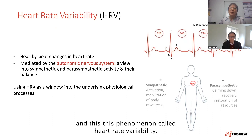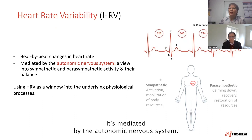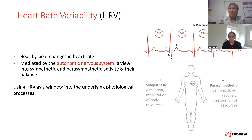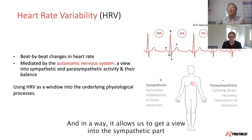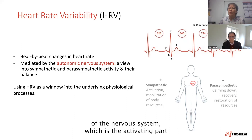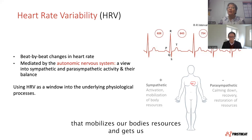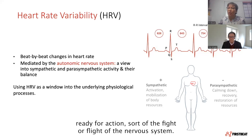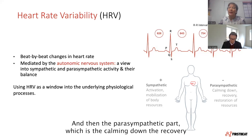This phenomenon called heart rate variability is mediated by the autonomic nervous system. And in a way, it allows us to get a view into the sympathetic part of the nervous system, which is the activating part that mobilizes our body's resources and gets us ready for action — sort of the fight or flight of the nervous system.